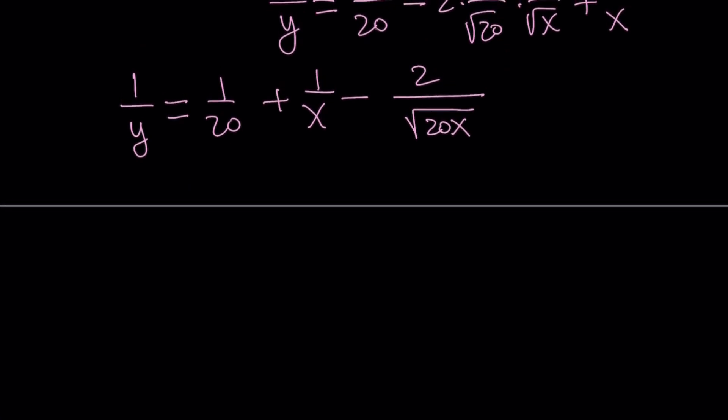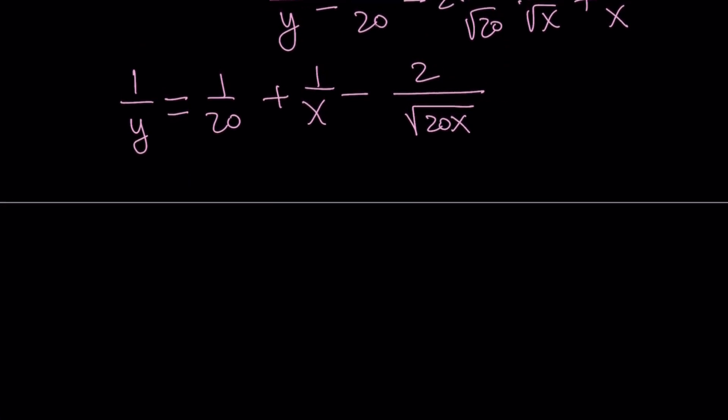Notice that everything is rational except for the radical. So that radical also needs to be a rational expression. This means the square root of 20x must be rational. In order for that to happen, what's inside the radical needs to be a perfect square. So 20x needs to be something like n squared, where n is an integer.